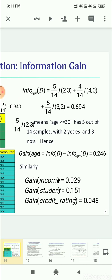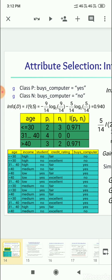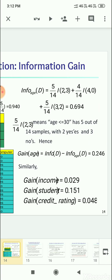You have to find the information gain. Here it is given by 5 by 14 times (2,3) plus 4 by 14 times (4,0) plus 5 by 14 times (3,2). That means for age less than or equal to 30, you have to find how many yes is there, how many no is there. So age less than or equal to 30 has 5 out of 14 samples. Out of 5 samples there is 2 yes and 3 no. So that is given by 5 by 14 (2,3) plus 4 by 14. Likewise, everything is done.